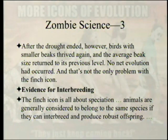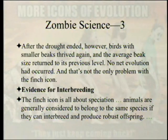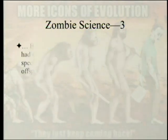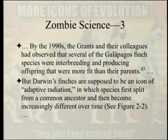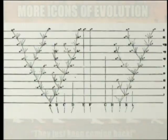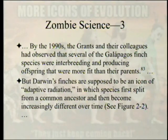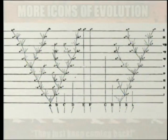The finch icon is all about speciation. Animals are generally considered to belong to the same species if they can interbreed and produce robust offspring. By the 1990s, the Grants and colleagues had observed that several Galapagos finch species were interbreeding and producing offspring more fit than their parents. But Darwin's finches are supposed to be an icon of adaptive radiation — species first splitting from a common ancestor and then becoming increasingly different over time.